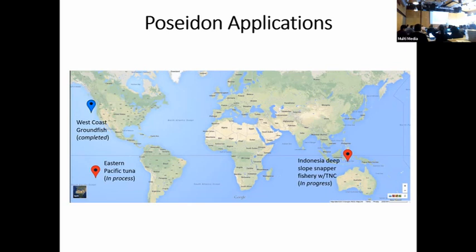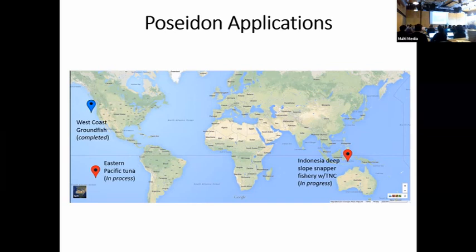The two policy-based implementations currently underway — where we're hoping to actually use this tool to move the policy needle — are with the Eastern Pacific tuna fishery, in partnership with IATTC and Mark's group, and then an implementation in partnership with the Indonesian government that's looking to help them develop management around their deep-water, deep-slope snapper and grouper export fisheries.